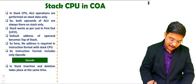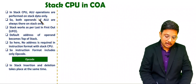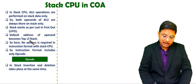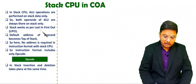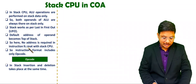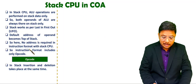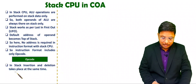In stack CPU, all operations happen with respect to the stack only. ALU will perform all operations with respect to stack data only. Both operands of ALU are always on the stack. The stack works as per last-in first-out, and default addresses are at the top of stack only. You don't need to specify any address for operands, as they are already on the stack. So the instruction format will have opcode only.